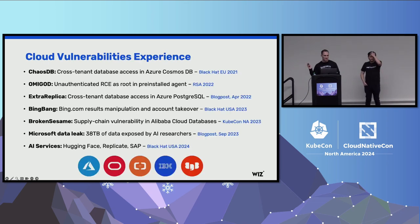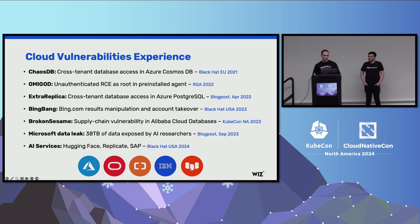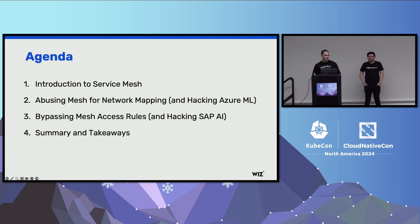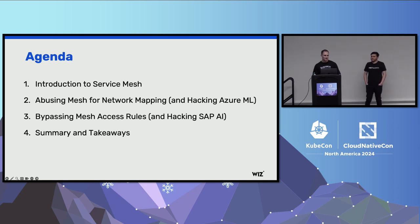You might be familiar with some of our previous findings — notable cloud incidents like KSDB, Bing Bang, and some AI services, which we're going to talk about later on in this talk. In this talk, we are also going to cover a quick introduction to what is the service mesh, how attackers might abuse service mesh solutions to map internal networks, how we did just that in Azure ML, how attackers might bypass the security rules imposed by service mesh solutions, how we did exactly that to attack SAP AI, and we'll finish with some summary and takeaways.